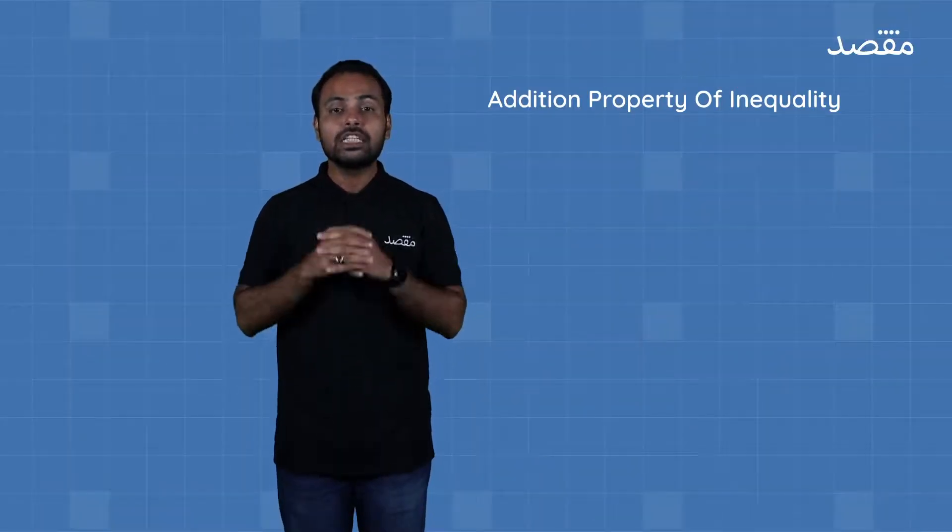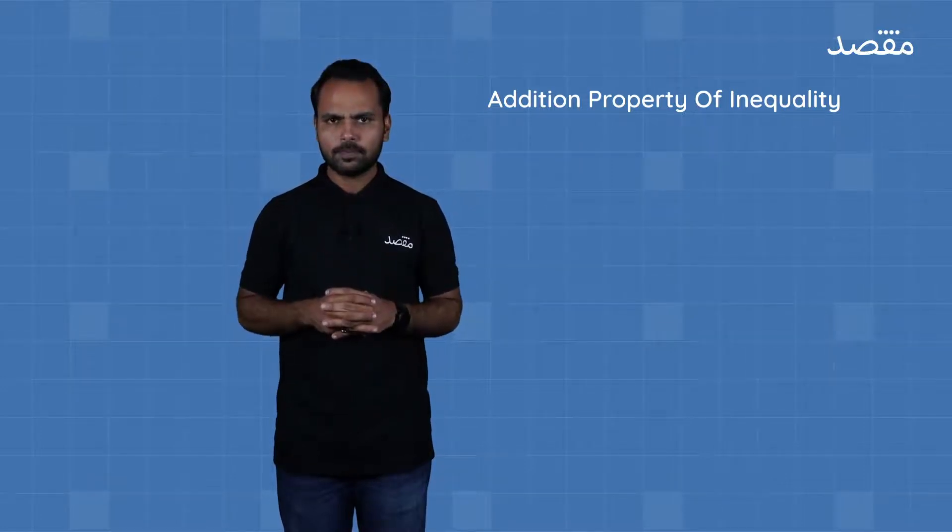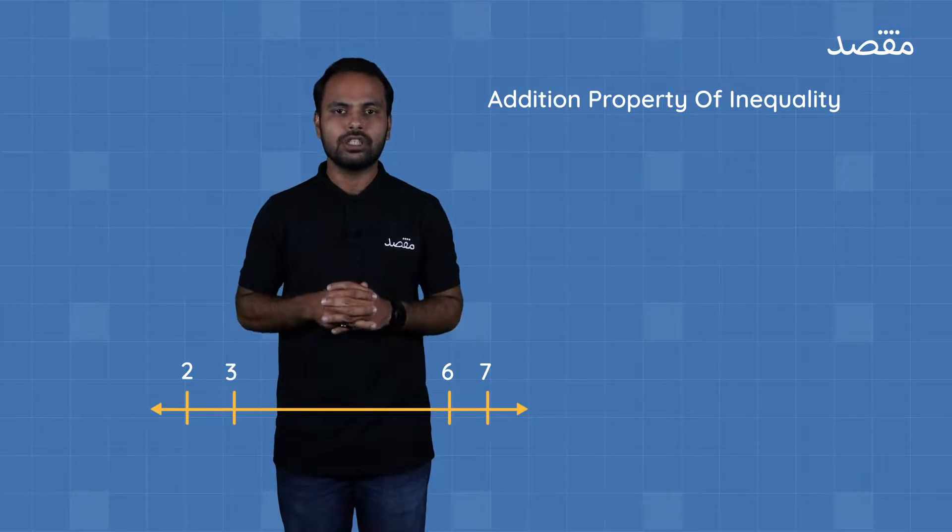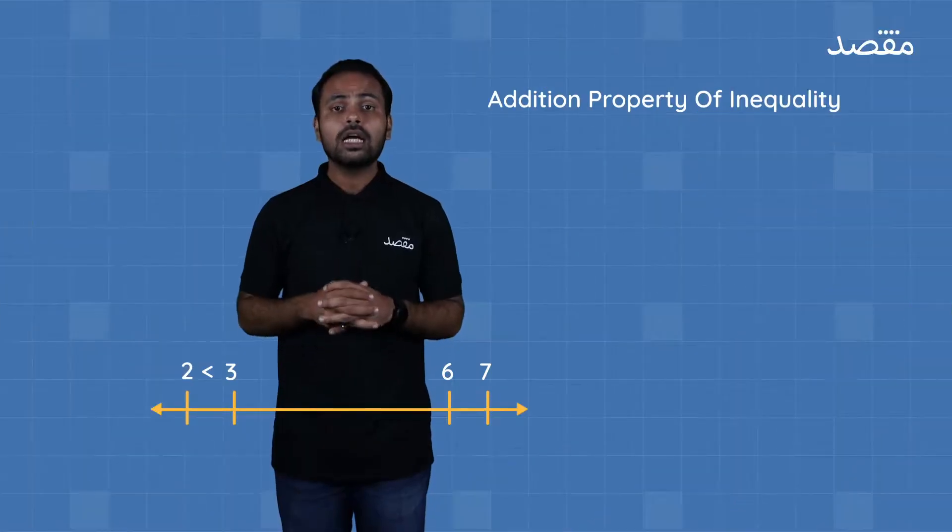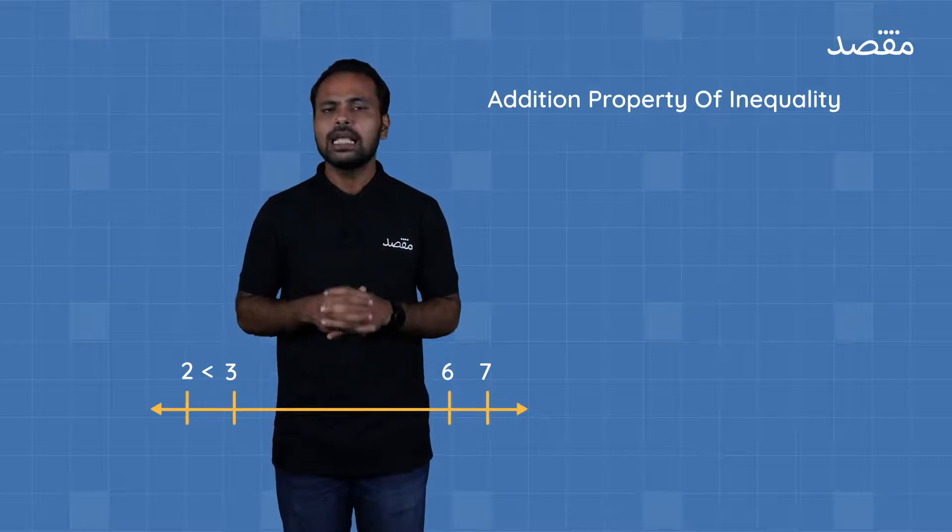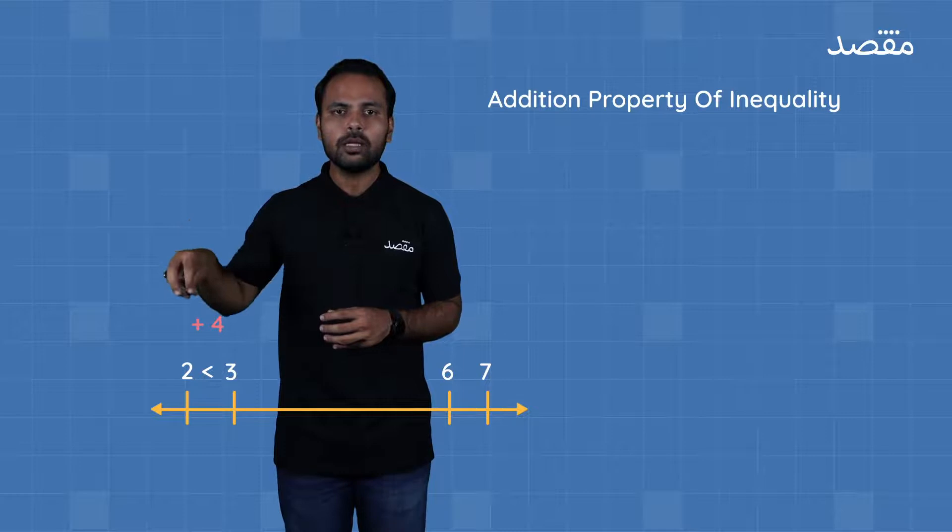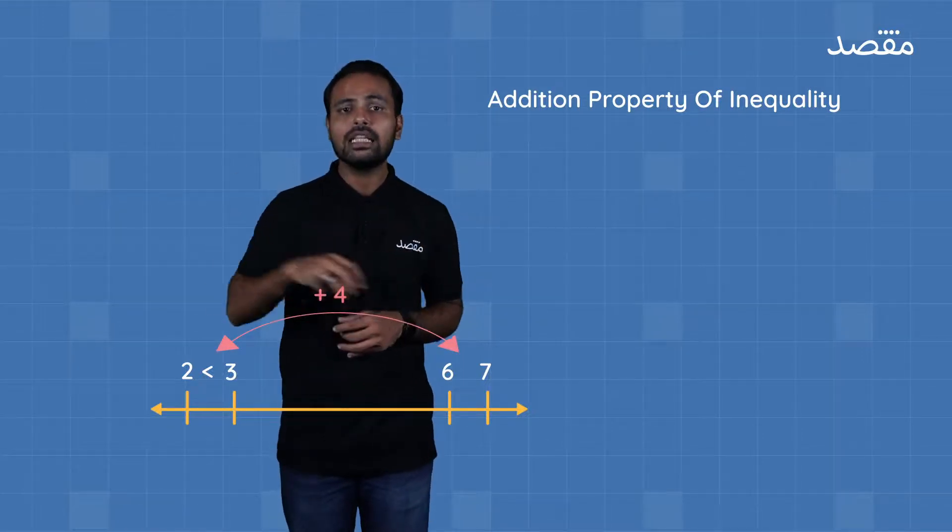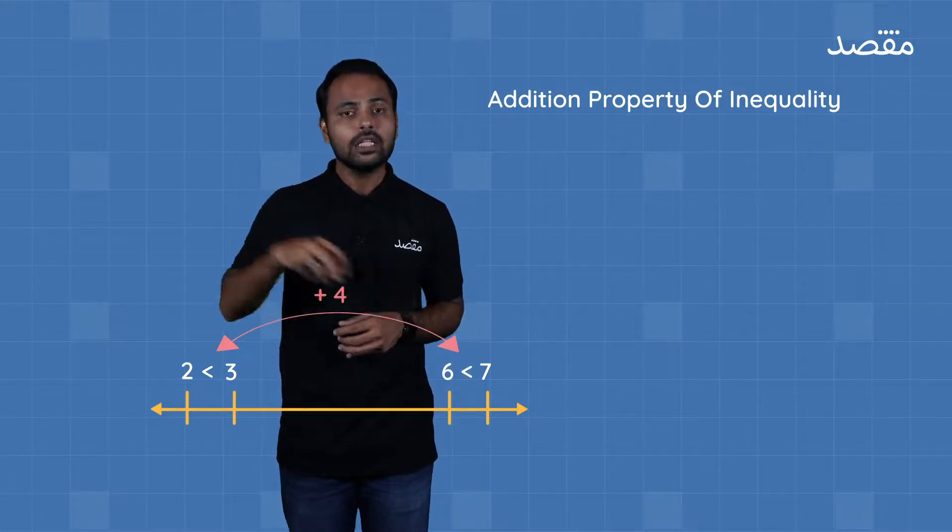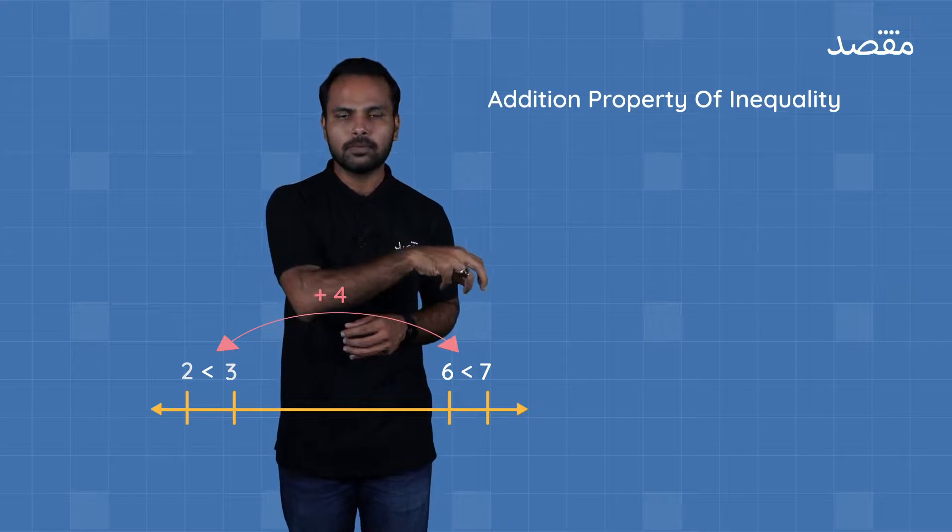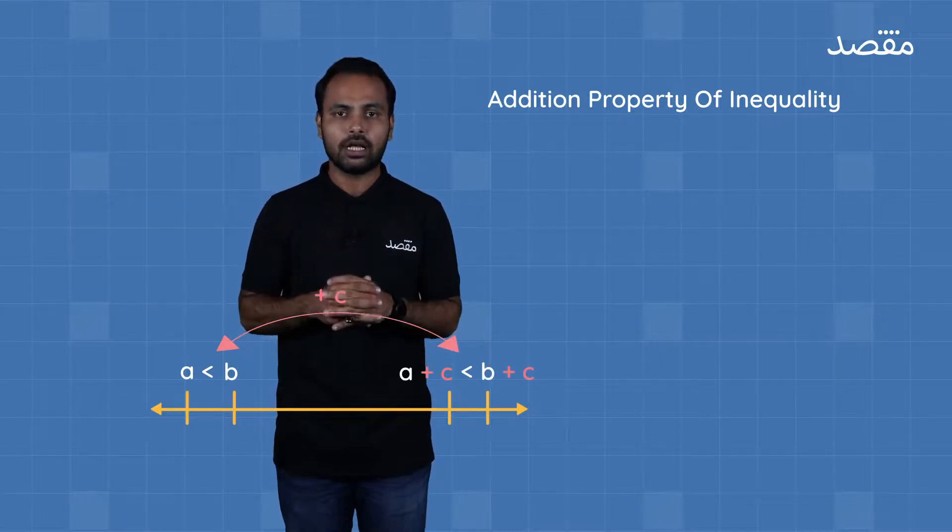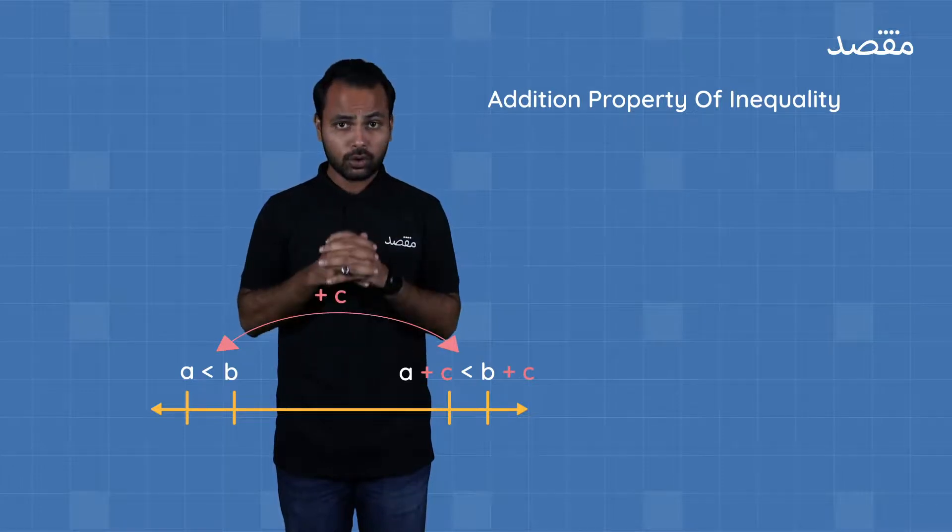Now let's talk about the addition property of inequality. Let's take an example again. This is our number line and we have these numbers: two, three, and so on. We still have the same relation that three is greater than two. Now if we add the same constant on both sides of the inequality, our relation will remain the same. Let's take an example: if we add four to three and also add four to two, then this three will move to seven and this two will move to six. Basically, the relation will still hold because seven is greater than six. Both numbers have moved the same number of places. So the idea is that if we add the same constant on both sides of the inequality, our relation will remain the same; only the places will change. This holds true for all real numbers.